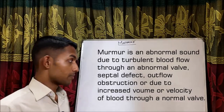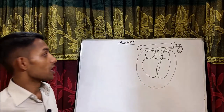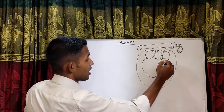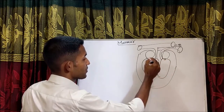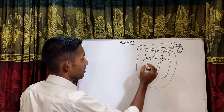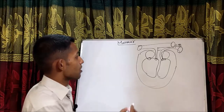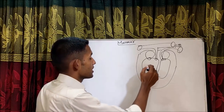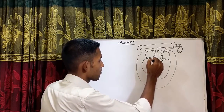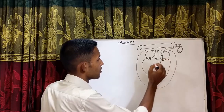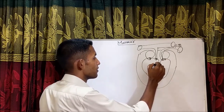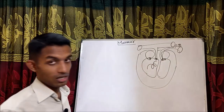This is a schematic diagram of the heart. There is mitral valve, tricuspid valve, aortic valve, and pulmonary valve. Murmur means either there will be pathology in the valve — there is an abnormal valve — or maybe abnormal velocity or abnormal volume of the blood.